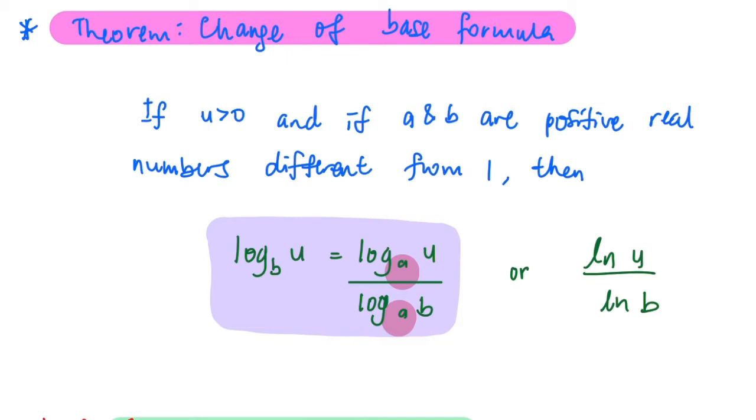So this is the formula: log base a of u divided by log base a of b. However, you can also use ln if you want. So if you want to use ln, this is just simple, just take ln of your argument divided by ln of the old base.